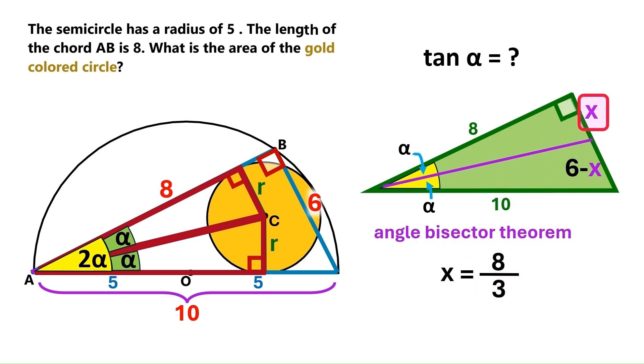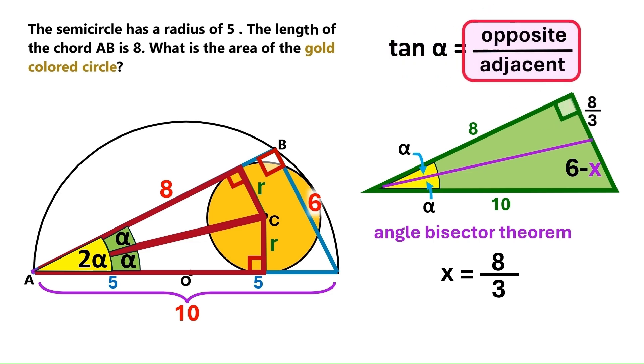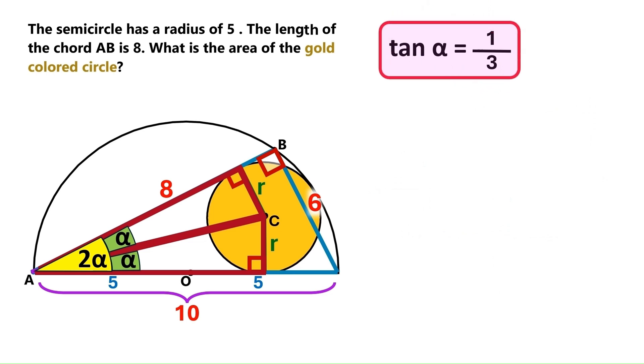So let's replace this x with that. Tangent alpha is basically the opposite side divided by the adjacent side. This is the opposite side, so let's put 8 over 3 up here. This is the adjacent side, so let's put 8 down here. This fraction equals 1 over 3. We have found tangent alpha.